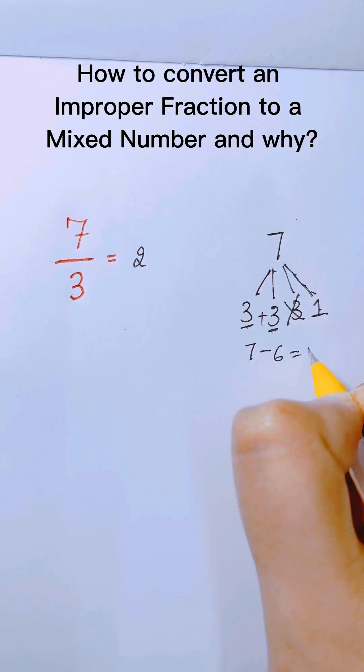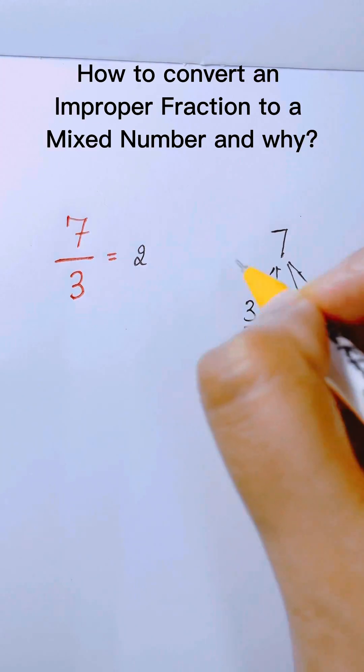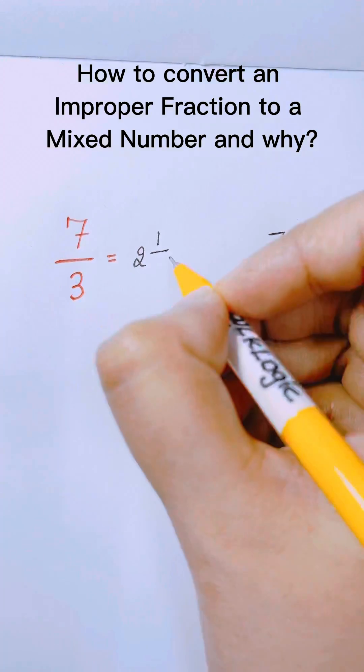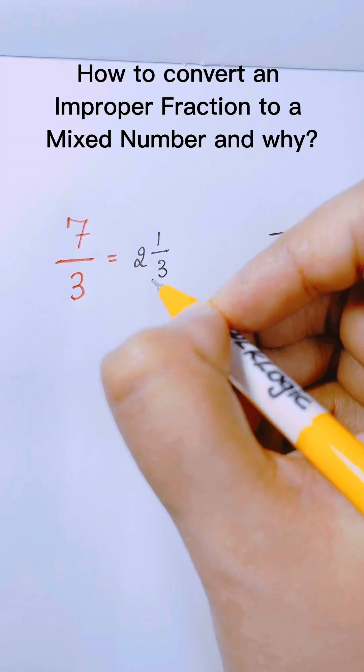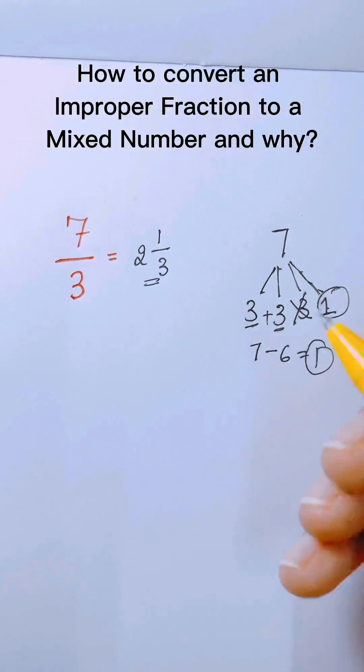So how many more we need to get 7? 1 more. And that's why our numerator is 1 and denominator is same. So it's 2 and 1 thirds.